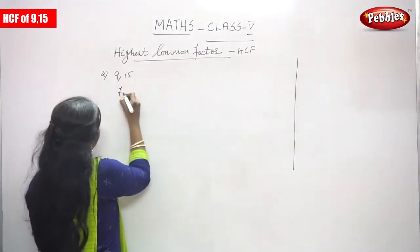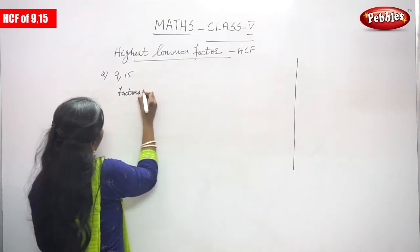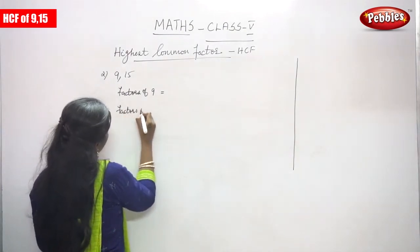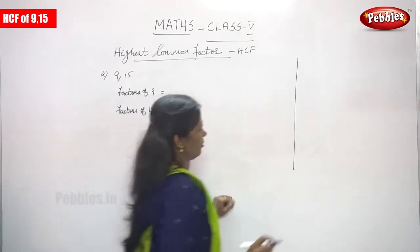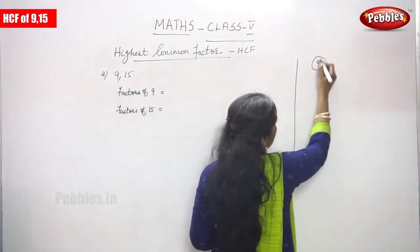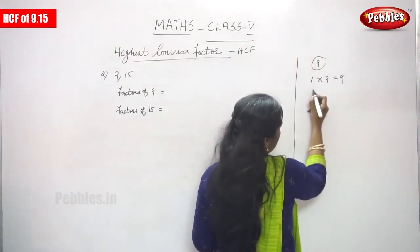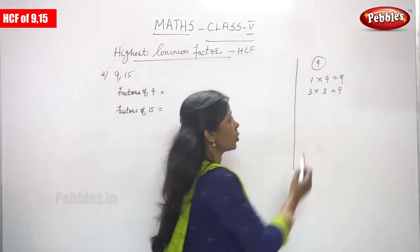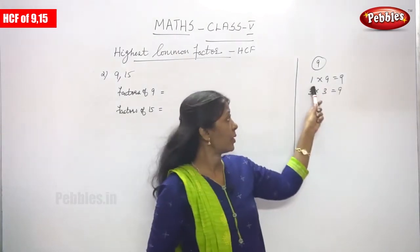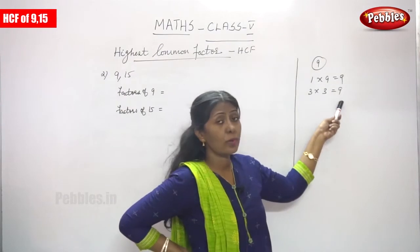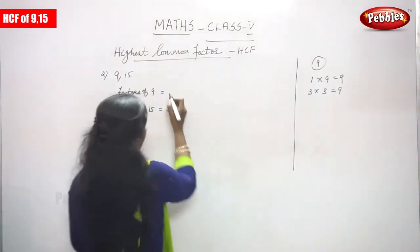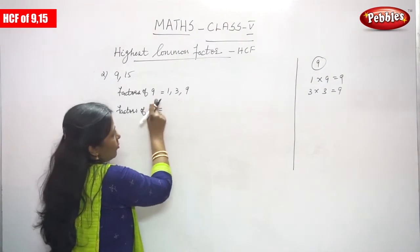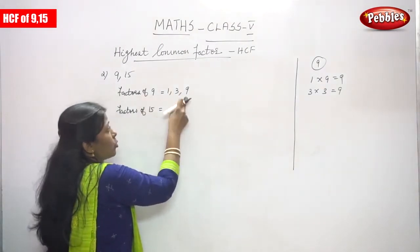For 9 and 15, first you have to write the factors of 9, then the factors of 15. So, for 9: 1 into 9 you can get 9, and 3 into 3 is equal to 9. So the factors of 9 are 1, 3, and 9. 1 is a factor of 9, 3 is a factor of 9, and 9 is also a factor of 9.